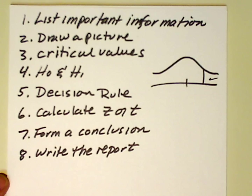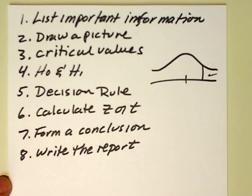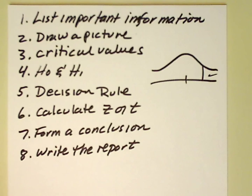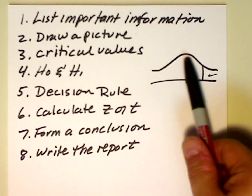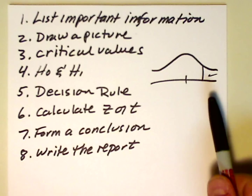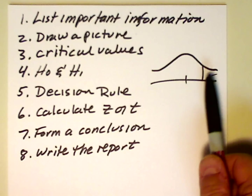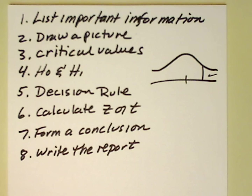There are some steps in hypothesis testing. We want to list the important information — things like the population mean, the sample mean, the standard deviation, sample size, and the alpha, the level of significance at which we're working. We then want to draw a picture, something like you see here, and we want to identify the critical value and the means and that information.